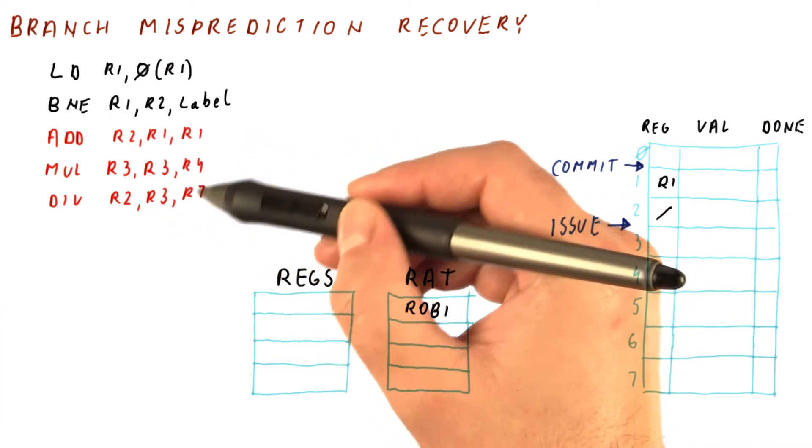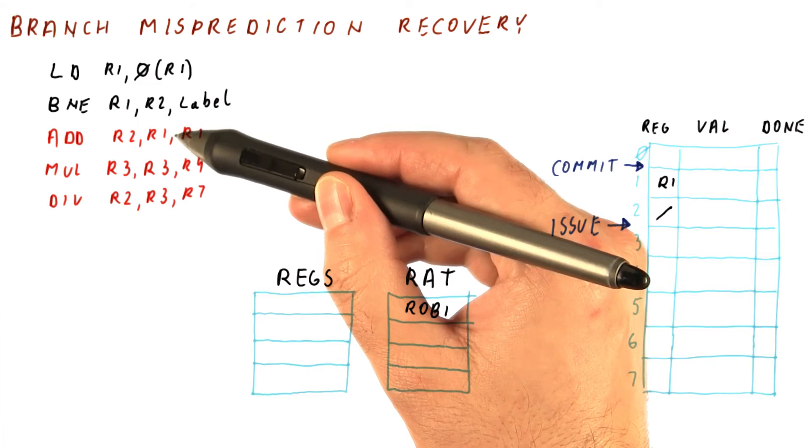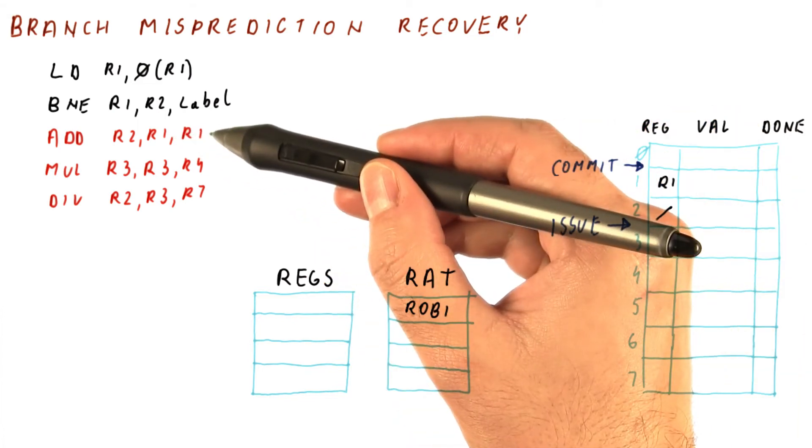Next, what happens, we will issue instructions that shouldn't have been issued. But the processor doesn't know that yet, so it's just going to do it anyway.